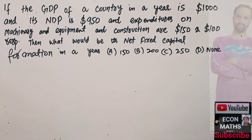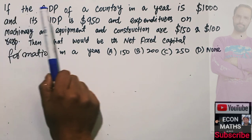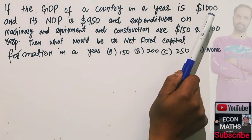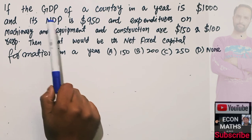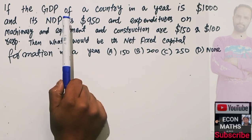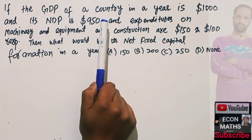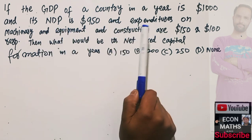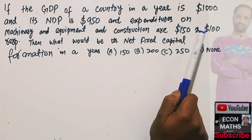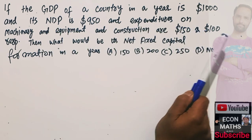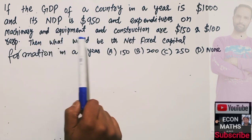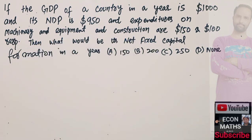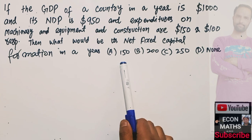In this video, we will learn how to calculate net fixed capital formation from the given data. The question is: if the GDP of a country in a year is $1000, the net domestic product is $950, and expenditures on machinery and equipment and construction are $150 and $100 respectively, then what would be the net fixed capital formation in a year?